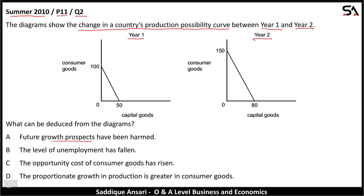What can be deduced from the diagrams? Option A: future growth prospects have been harmed. In Year 1, consumer goods are 100, and in Year 2 they are 150 — more consumer goods are produced. Capital goods go from 50 to 80 — more capital goods are also produced. So the production possibility curve is shifting outwards, meaning future growth prospects have not been harmed. A cannot be the answer.